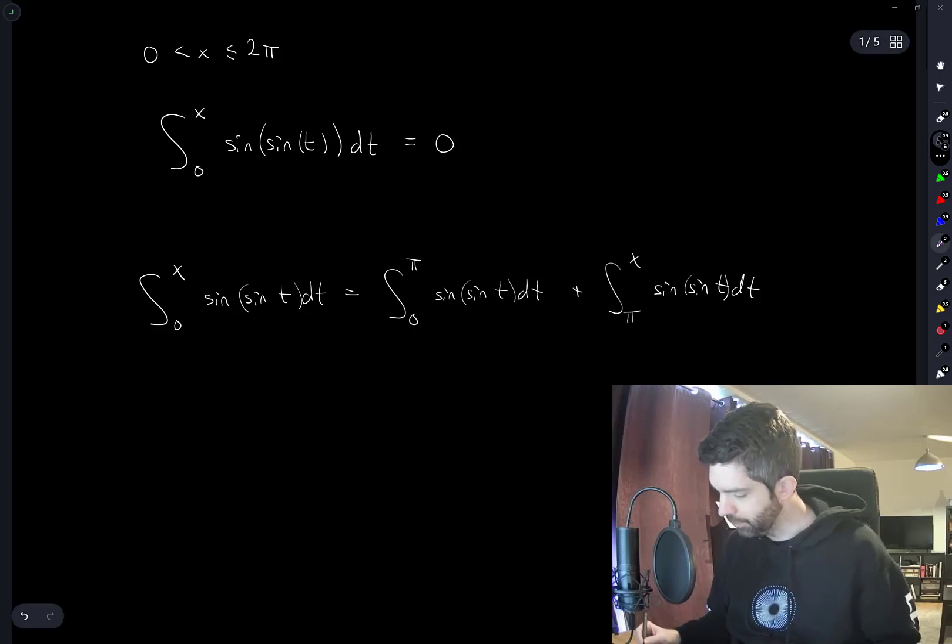Okay, so this is of course only true when...well, this is always true the way it's written. But this is positive. And this is negative. But in absolute value, this is always going to be smaller in absolute value, unless x is equal to 2 pi.